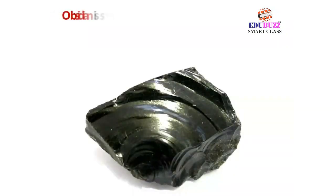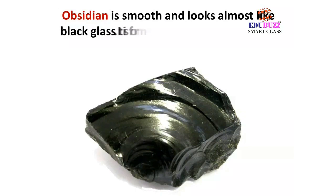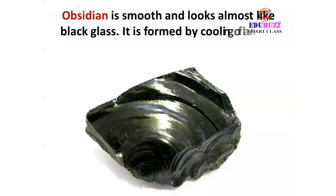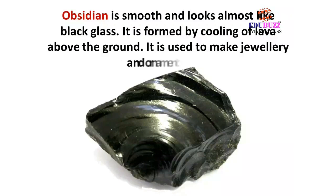Obsidian is smooth and looks almost like black glass. It is formed by cooling of lava above the ground. It is used to make jewelry and ornaments.